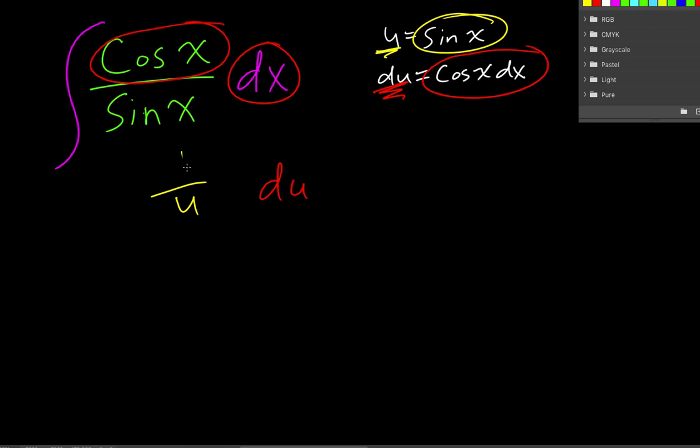So it's one over u. And then I still have my integration sign. From there, we know that the anti-derivative of one over u is natural log absolute value of u. And we say plus c.